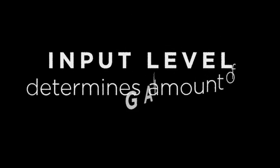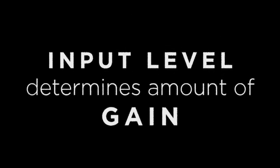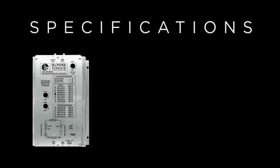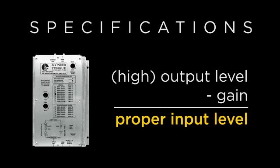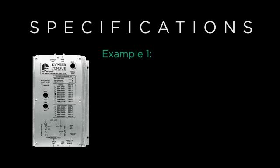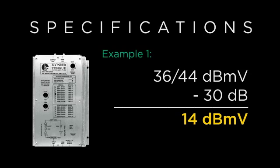The input level of the amplifier determines what amount of gain you need. If you look at the specifications of almost any amplifier, be it a Blondertong amplifier or another manufacturer's, the input level is not listed. But the proper input level to an amplifier can be determined by subtracting the gain from the rated high output level. For example, a BIDA 75A-30 amplifier has a rated output of 44 dBmV and a gain of 30 dB. 44 minus 30 equals 14, so the minimum required input to this amplifier to achieve the rated output is 14 dBmV.